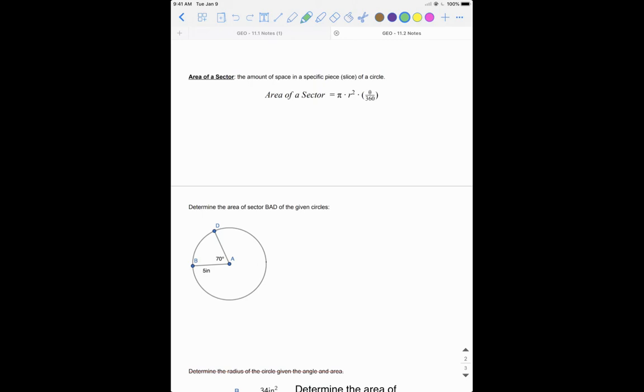So we've got this nice equation: area of a sector. Notice that our area of a circle comes out right there, πr², area of a circle, and then we have this theta over 360, where theta is that angle.